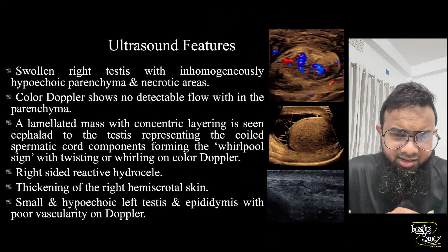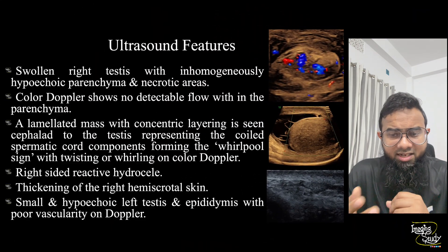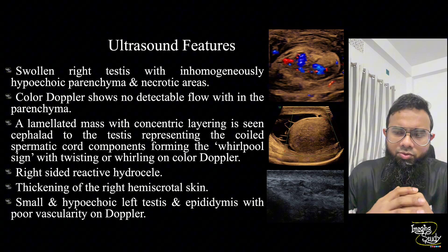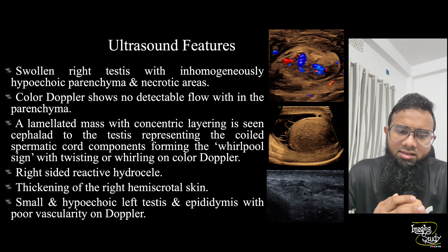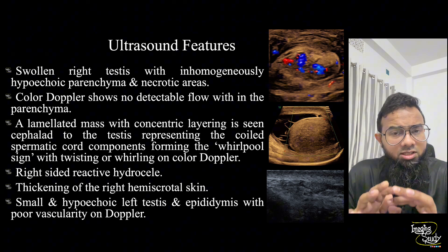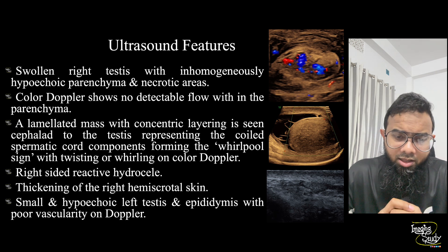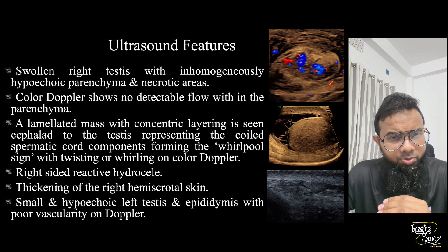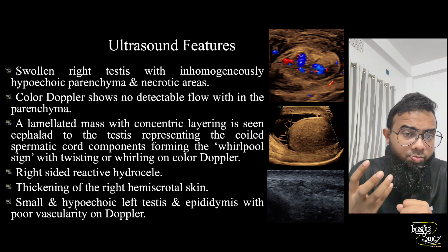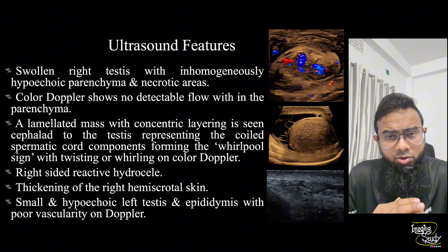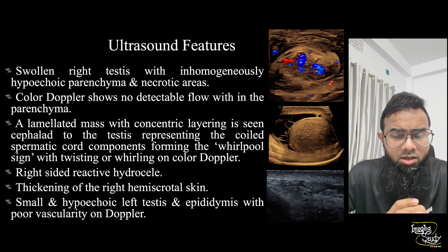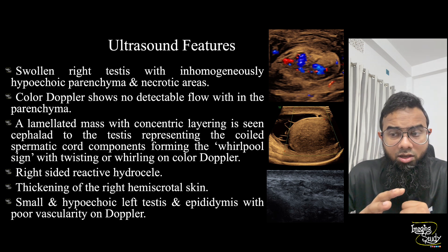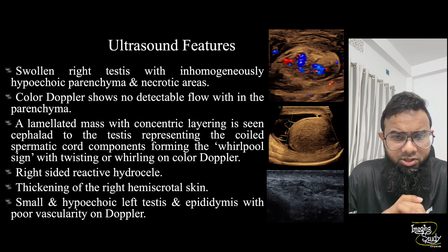In summary, we found a swollen right testes with inhomogeneously hyperechoic parenchyma and tiny necrotic spaces. Color Doppler showed no detectable flow within the testicular parenchyma. There was a lamellated mass with concentric layering cephalad to the testes representing the coiled spermatic cord — the whirlpool sign — which is the twisting or whirling seen on color Doppler.